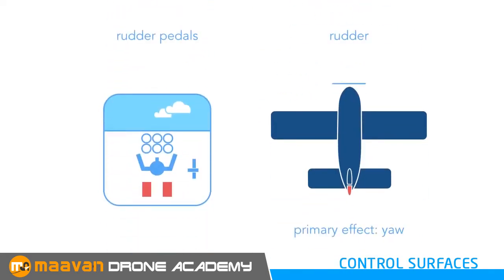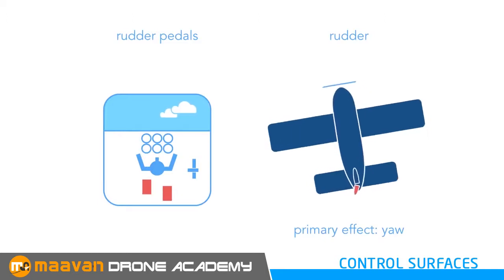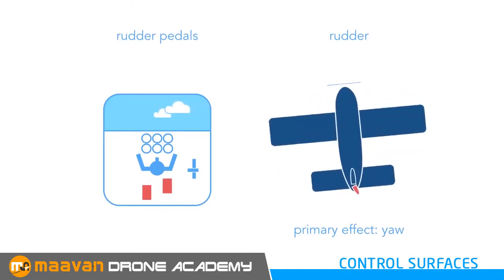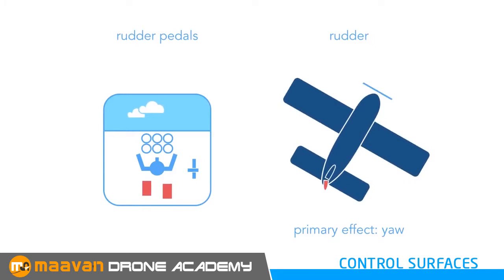The pilot uses rudder pedals to operate the rudder. Pressing the left pedal moves the rudder left and the primary effect is a yaw to the left. The right rudder yaws the aircraft to the right.